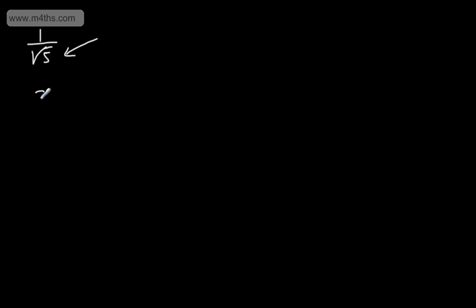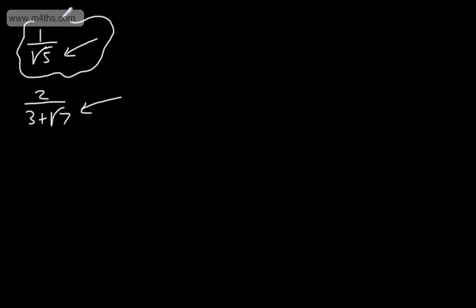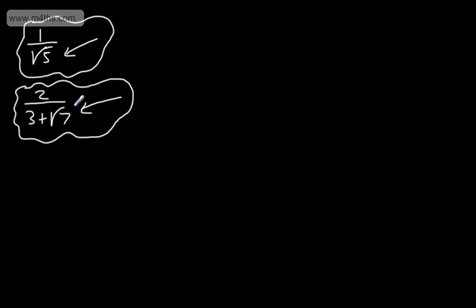What we're going to do is look at rationalizing this fraction. We might have another fraction — 2 over 3 plus root 7. This also has an irrational denominator, so we would look to rationalize it. The reason we do this is because in the old days, before calculators and computers, mathematicians had to work these out by hand, and it was significantly easier with a rational denominator. We're going to look at two different types: where we simply have one surd value in the denominator, and where we have an addition or subtraction between two terms.